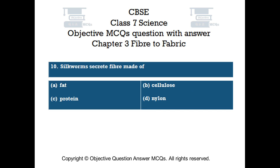Question number 10. Silkworms secrete fiber made of: Option A Fat, Option B Cellulose, Option C Protein, Option D Nylon.